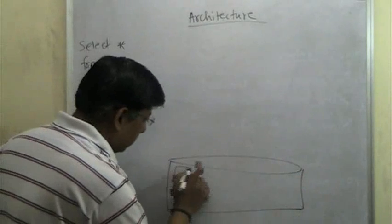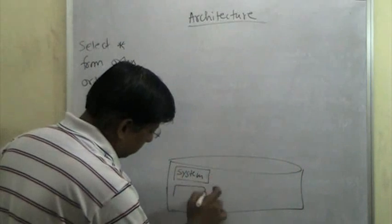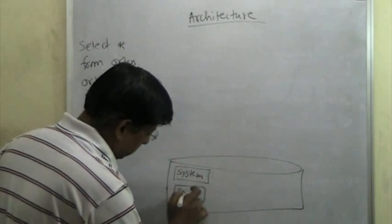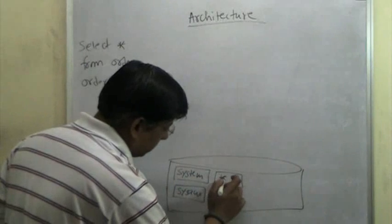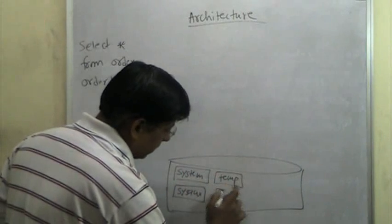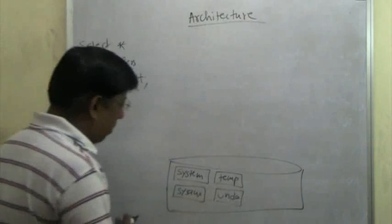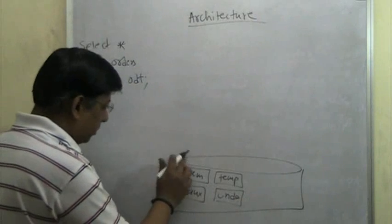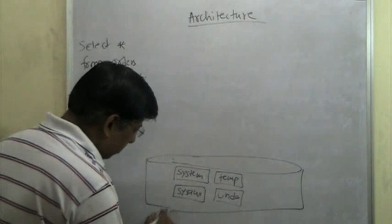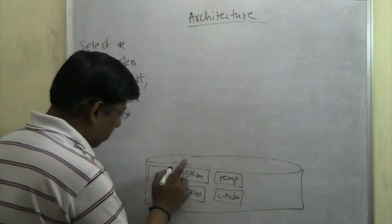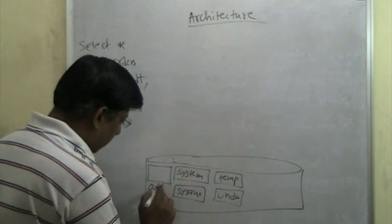On my hard disk there is a system tablespace, there is a SYSAUX tablespace, then there is a temp tablespace for temporary things, and then there is UNDO. Along with this, there are some other tablespaces — let us say a tablespace called OData.